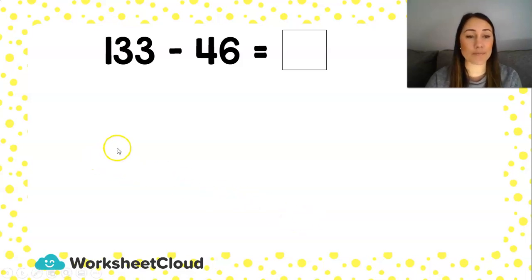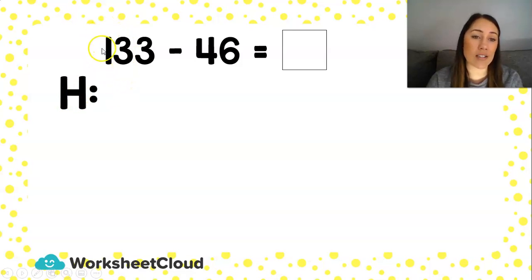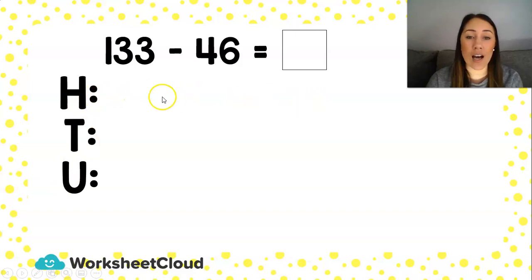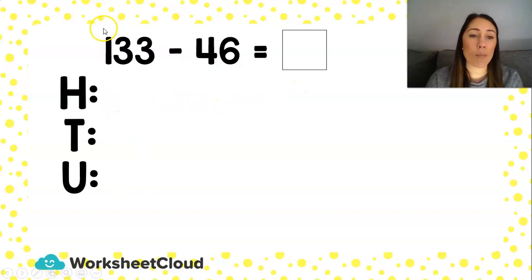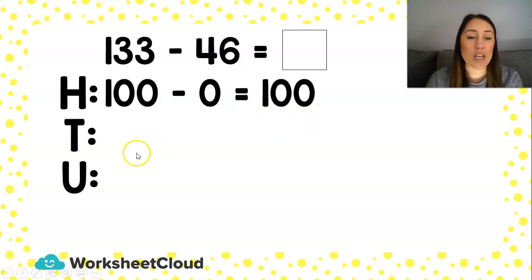Let's try another example. I have 133 minus 46 is equal to a block — that is my number sentence. Because my first number has a 100 in it, I need a 100s line, a 10s line, and a units line. In my 100s line, my first number has 100 and my second number doesn't have any 100s. So I say 100 minus 0, which is 100. That's quite an easy sum.